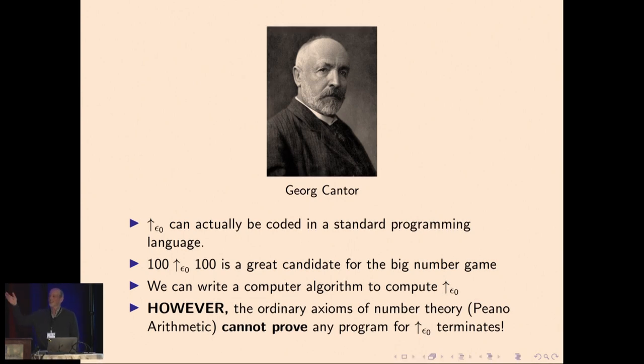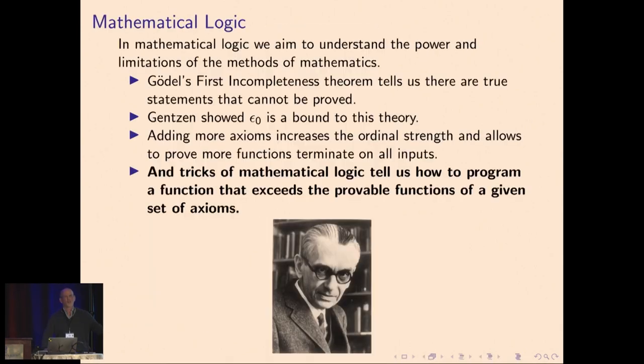However, the axioms of ordinary number theory are not sufficient to prove that that algorithm terminates. This is a well-known theorem of proof theory that the standard axioms of number theory, of Peano arithmetic, have this bound that's defined by this ordinal ε₀. If you know something about axiom systems, you know there are more powerful axiom systems than Peano arithmetic, and maybe we can use those to get more powerful functions that grow even faster and define even bigger numbers.